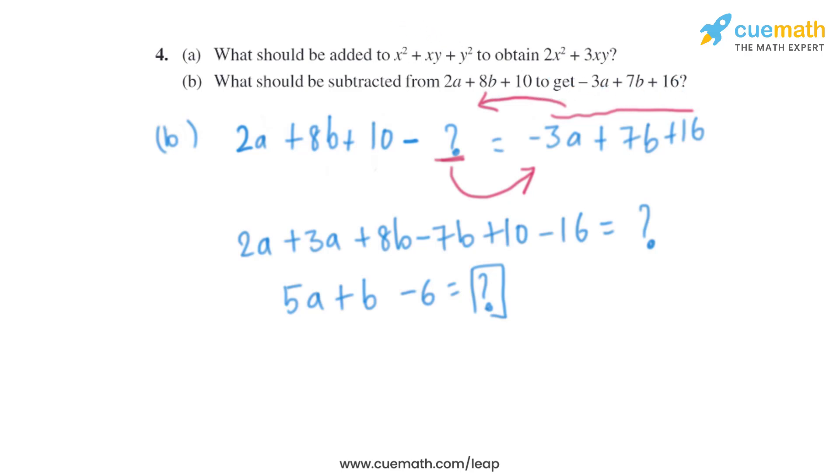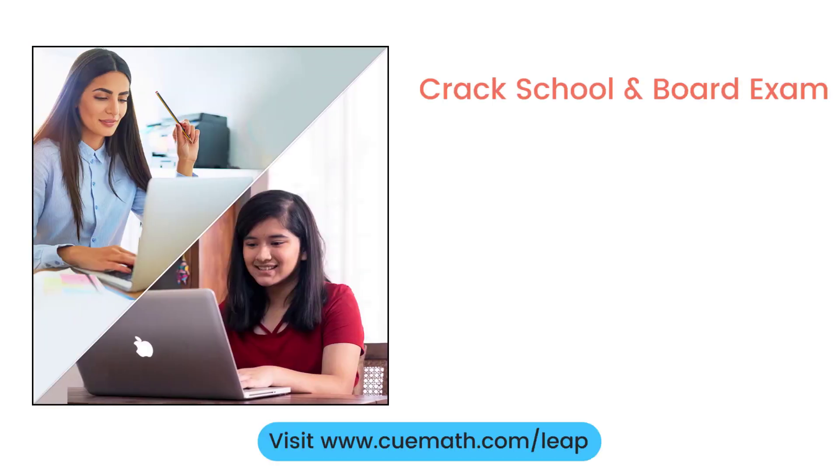So if we subtract 5a + b - 6 from 2a + 8b + 10, we will get -3a + 7b + 16. To learn more about how Cuemath can help you crack school and board exams, explore Cuemath LEAP.